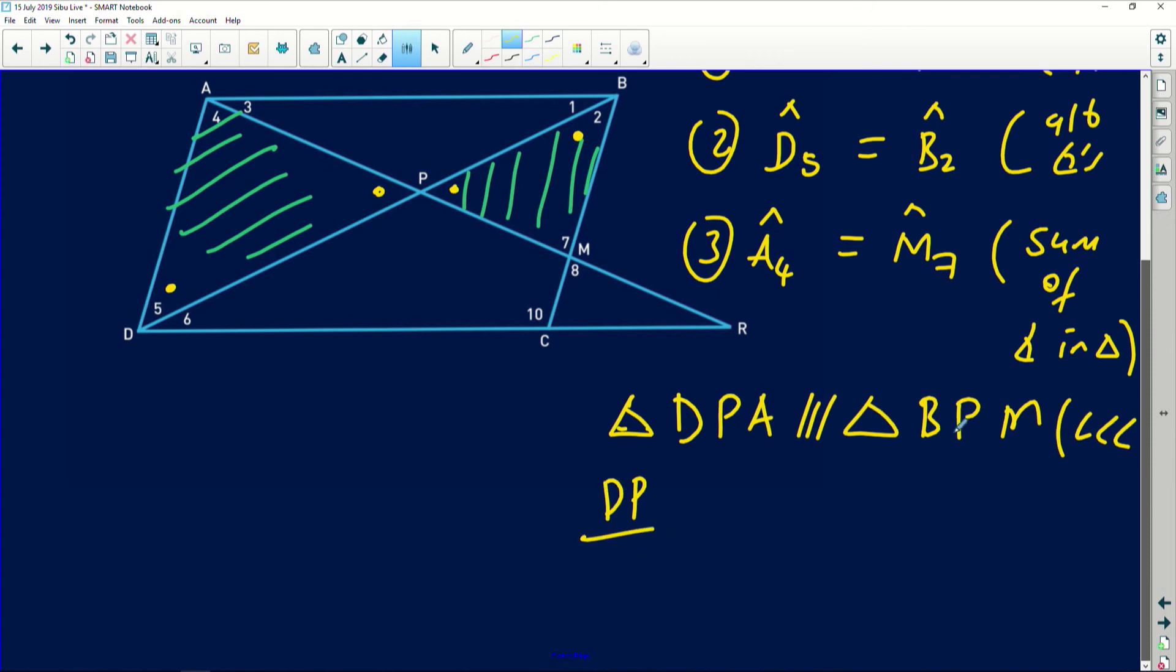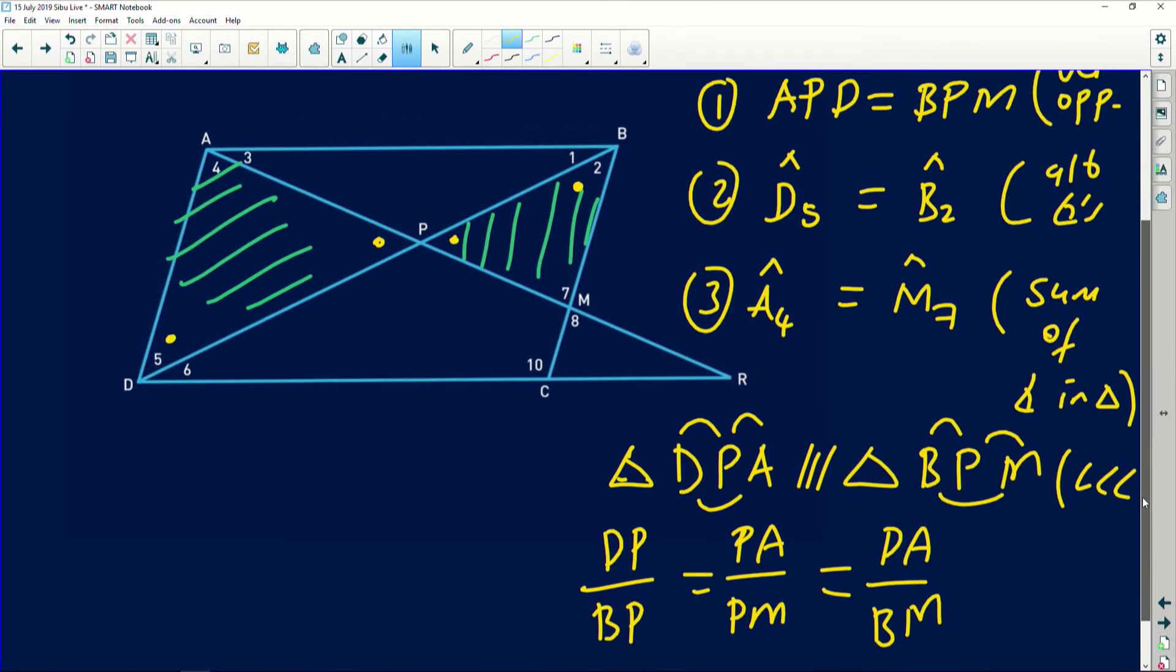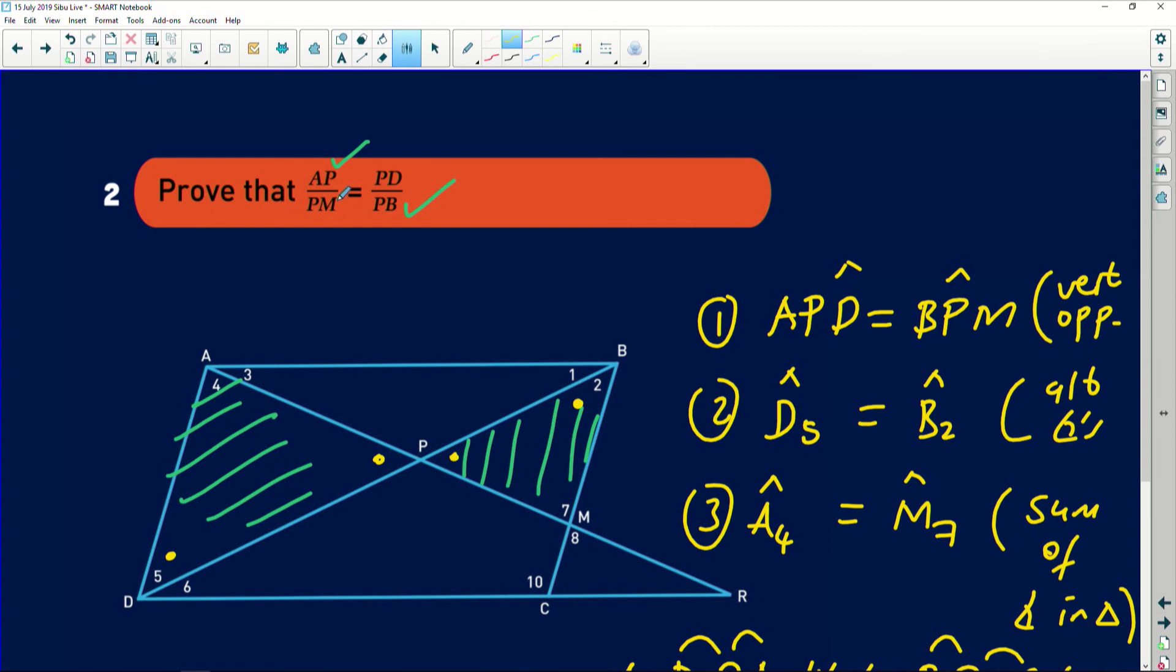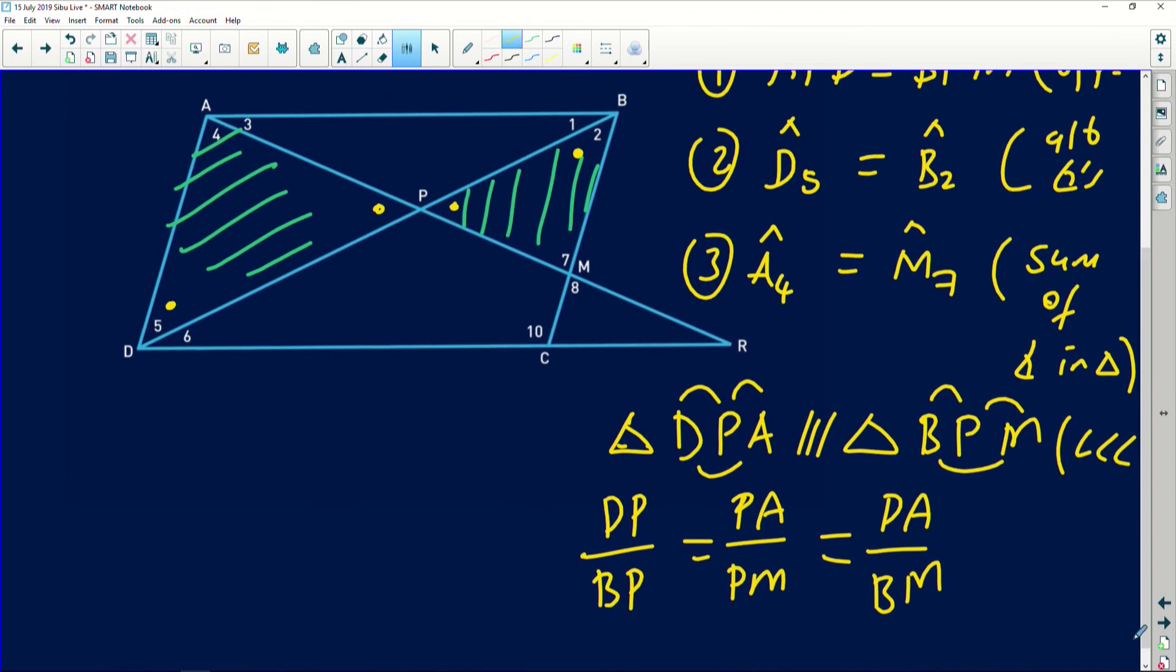So therefore, the triangle DPA will be similar to triangle BPM. And this is because of angle, angle, angle. Then DP, this side divided by that side BP will be equal to PA divided by the side PM, and then it's going to be equal to the side DA divided by the side BM. Once you have done that, then you try and check which one are they talking about. They're talking about AP and they're talking about PB.